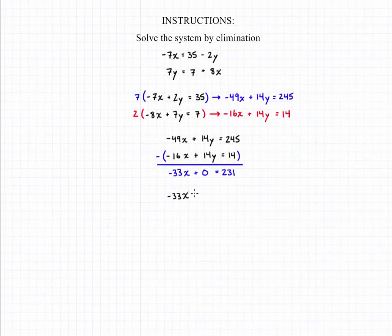If we rewrite that equation we can solve for x by dividing both sides of the equation by negative 33. And that will give us our solution for x which is that x is equal to negative 7.